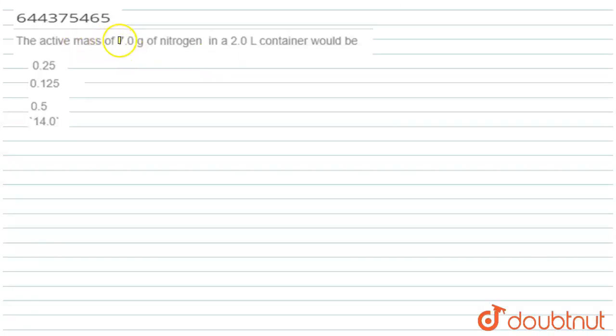The question is: the active mass of 7 gram of nitrogen in 2 liter container would be what?